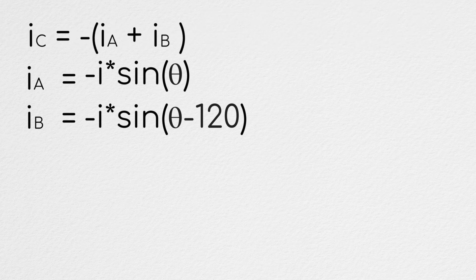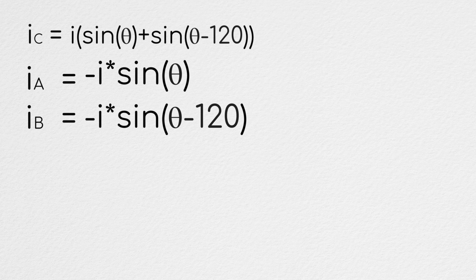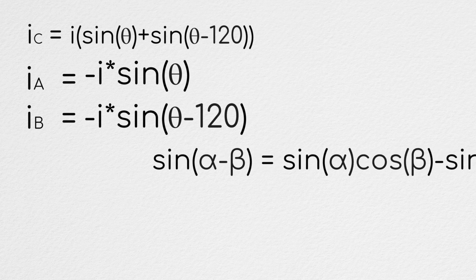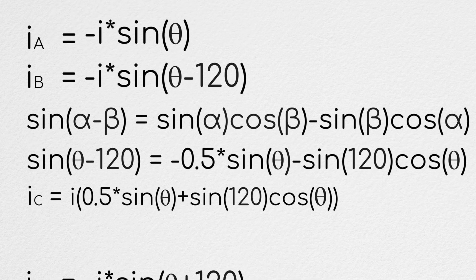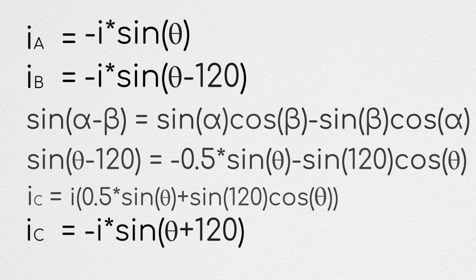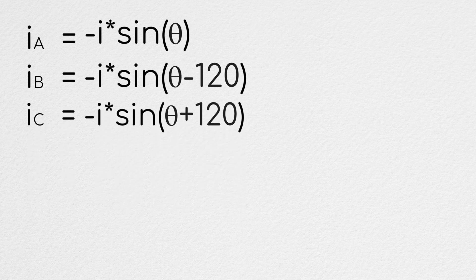We know from Kirchhoff that the current in a plus the current in b plus the current in c must equal zero. Therefore, we can show that the current in c must be equal to i times the quantity sine of theta plus sine of theta minus 120. Doing some trigonometric substitutions, we find that the current in c must therefore be equal to negative i times sine of theta plus 120.